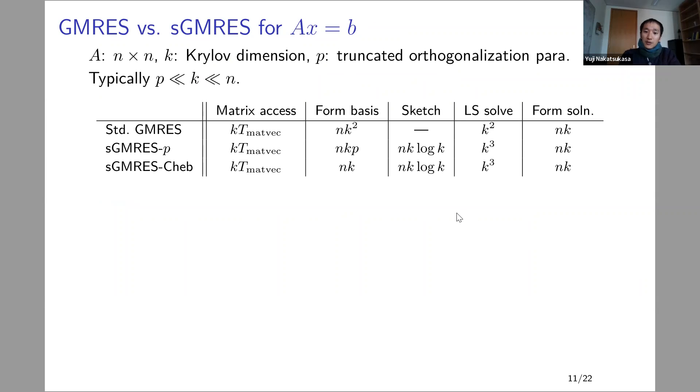Here's a highlight or comparison amongst the methods. Standard GMRES is going to be dominated eventually by this nk squared cost for k iterations. We reduce that to essentially order nk, P is a constant, by sketched GMRES. So SGMRES is sketched GMRES with truncated orthogonalization parameter P. It does need to sketch and solve, but that's almost never going to be the dominant part of the complexity.